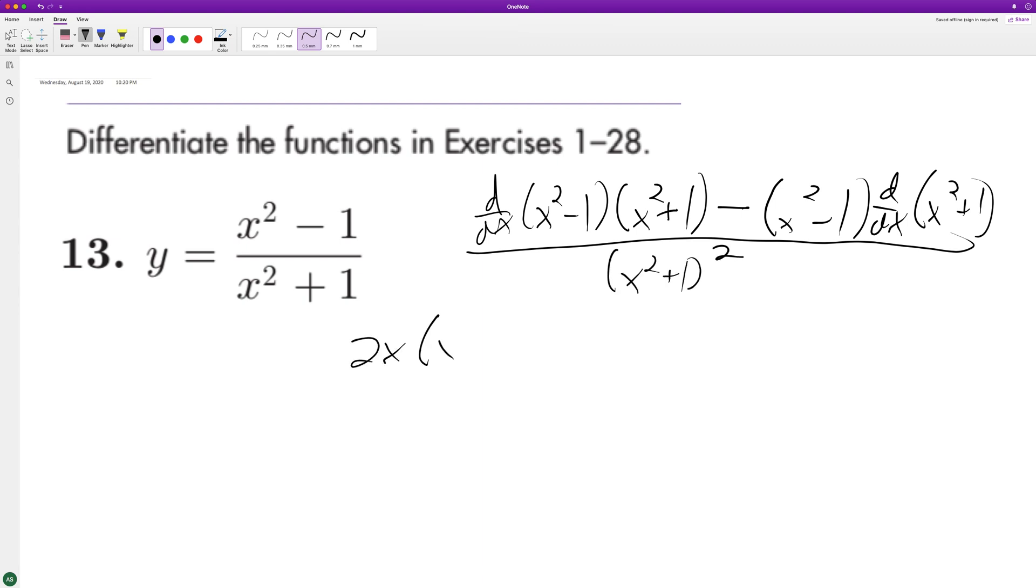So we end up with two x times x squared plus one minus x squared minus one quantity two x. And I'm gonna skip the writing down there for now.